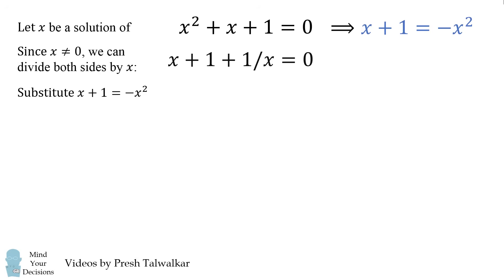We're going to substitute that into the second equation. So that first x + 1 becomes -x². Then we have + 1/x = 0. We'll now rearrange this equation to get 1/x = x². This means 1 = x³, so x = 1.